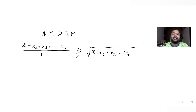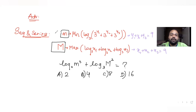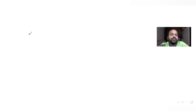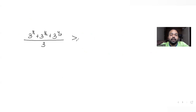Now let's apply this to the first expression. We have three terms: 3 raised to y1, 3 raised to y2, and 3 raised to y3. Taking the arithmetic mean: (3^y1 + 3^y2 + 3^y3) / 3 is greater than or equal to the cube root of (3^y1 · 3^y2 · 3^y3).